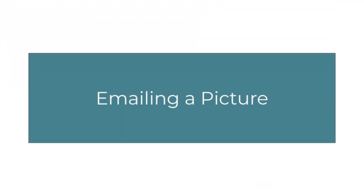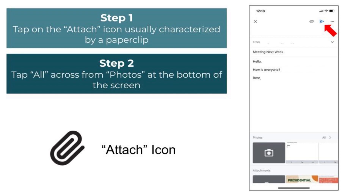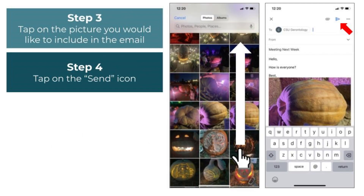Next, we will go over how to email a picture to someone, which is done before we tap on the send icon on the email. I created an email with the recipient, subject, and body already written. To attach a picture to an email, tap on the attach icon — commonly characterized as a paper clip — at the top of the screen, next to the send icon. Upon tapping the attach icon, a menu will open at the bottom of the screen starting with Photos. Tap on All across from Photos to view your photo album. If you do not see the picture you are looking for, scroll vertically by dragging a finger up or down on the screen. Once you have found the picture, tap on it to add it to the email. You can continue to add more pictures by tapping on the attach icon again.